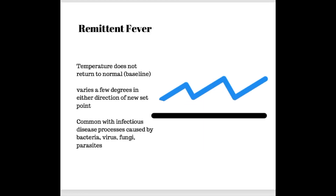A remittent fever is one where the temperature does not return to baseline. If the baseline is 37 degrees, you'll see the temperature always elevated — maybe bouncing between 38.3 and 38.5, back down to 38.3, up to 38.7, then 39. It continually stays elevated and bounces back and forth about a degree or few degrees in either direction around this new, higher set point.